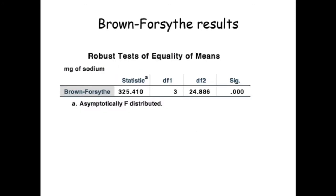The Brown Forsyth results include a test statistic, F. The between groups degrees of freedom is the same as for the conventional ANOVA, but the within groups degrees of freedom is different. This is rounded to the nearest integer when reporting results.